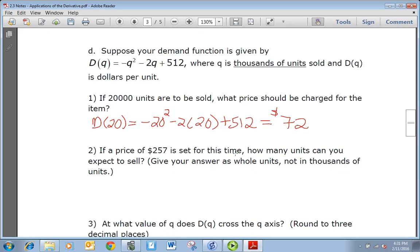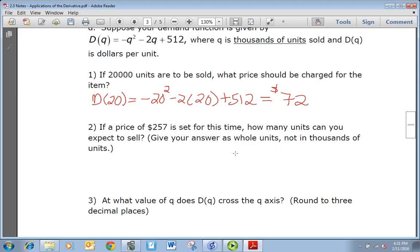If a price of $257 is set for this item, how many units can you expect to sell? Give your answer as whole units, not in thousands of units. This one we're going to take our demand function and we're going to set it equal to the price that we want and solve for q to get how many units. So you just need to subtract 257 from both sides.